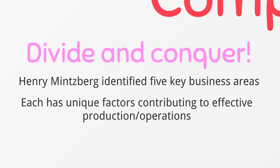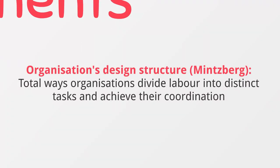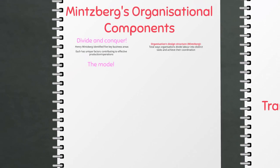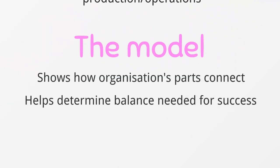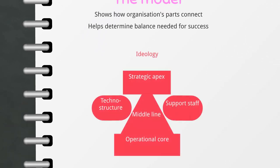Each of these key areas has its own unique contributing factors towards a business's effective production and operations. Minceberg came up with a definition for this design structure: it's the total number of ways in which an organization divides its labor into distinct tasks and then manages to achieve coordination between those tasks. What we're looking at in Minceberg's model is how the organization is connected, and by seeing this, an organization can help determine the correct balance it needs to achieve its success.